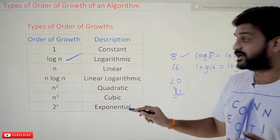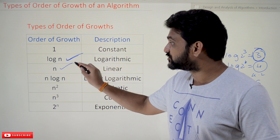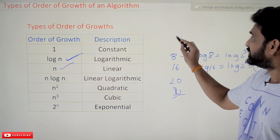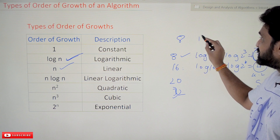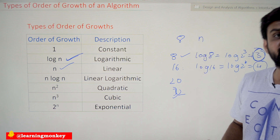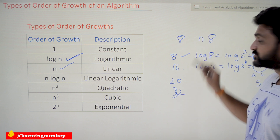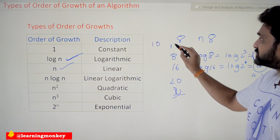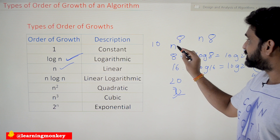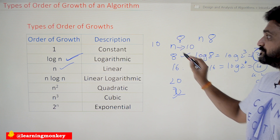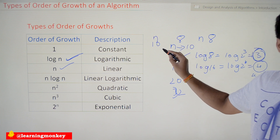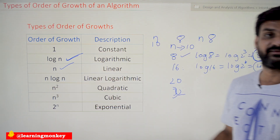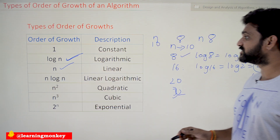The next one is linear growth — n. Linear growth means, for example, if you give 8 inputs, the number of steps executed is 8 steps. If you give 10 inputs, the number of steps executed is again 10. The number of steps is directly equal to the input size n. The next one is linear-logarithmic.